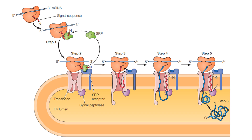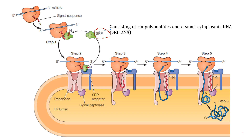Now let's go through the steps of co-translational translocation. First, the N-terminal signal sequence is synthesized by the ribosome and emerges from it. It is then recognized and bound by the Signal Recognition Particle, or SRP. The SRP consists of six polypeptides and a small cytoplasmic RNA.